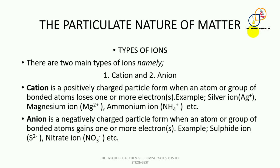A cation is a positively charged particle, formed when an atom or group of bonded atoms loses one or more electrons. Examples include the silver ion, the magnesium ion, and the ammonium ion, just to mention a few. An anion is a negatively charged particle, formed when an atom or group of bonded atoms gains one or more electrons. Examples include the sulfide ion and the nitrate ion.